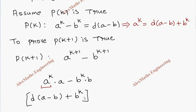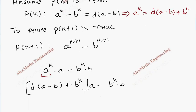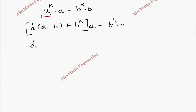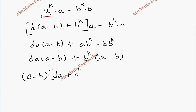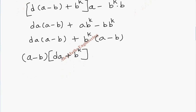Multiplying a inside, we get d·a·(a - b) plus a·b^k, and the last term b^k · b is b^(k+1). Finally, taking b^k common from the last two terms gives b^k·(a - b), so the entire expression becomes d·a·(a - b) plus b^k·(a - b), which factors as (a - b)·(d·a + b^k).